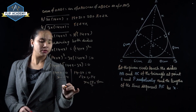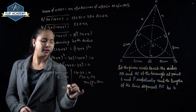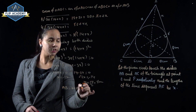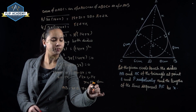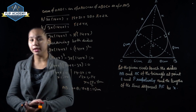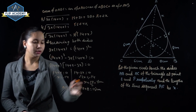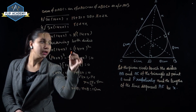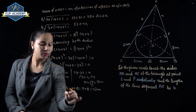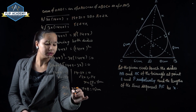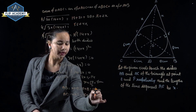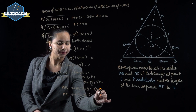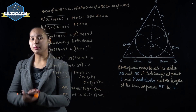The length of AB equals X+8 = 7+8 = 15 cm. The length of AC equals X+6 = 7+6 = 13 cm. Therefore AB and AC have been found.